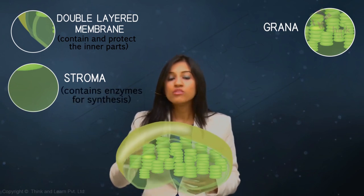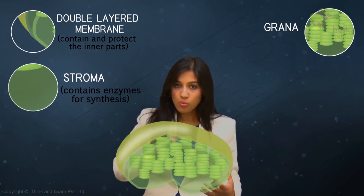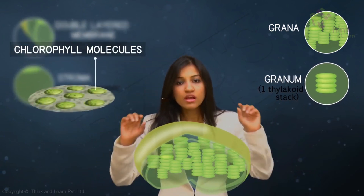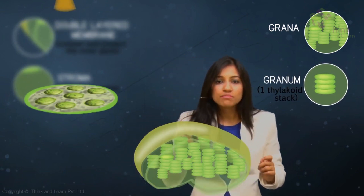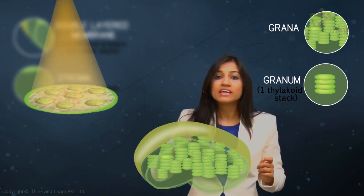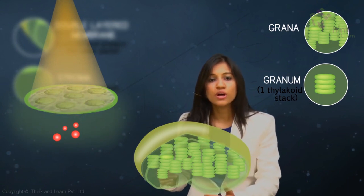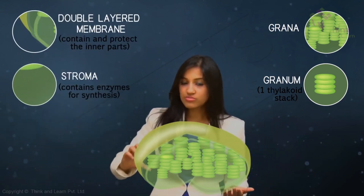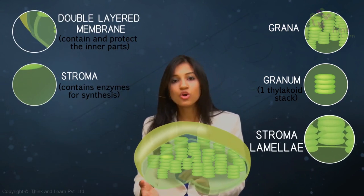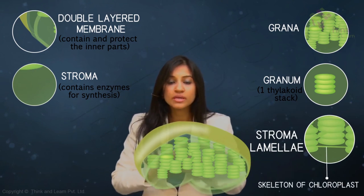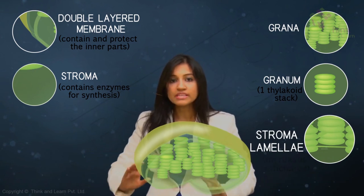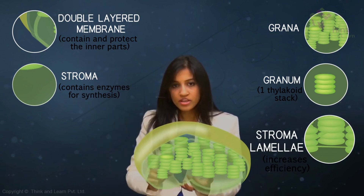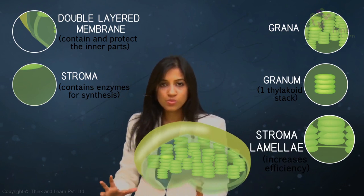The stroma contains enzymes required for the synthesis of carbohydrates and proteins. One stack is called a granum, which contains many thylakoids. Chlorophyll molecules sit on the surface of each thylakoid and capture light energy from the sun. As energy-rich molecules are created, they move to the stroma where carbon can be fixed and sugars can be synthesized. The stacks of thylakoid sacs are connected by structures called stromal lamellae — also called the skeleton of the chloroplast — keeping all the grana at a safe distance from each other and increasing the efficiency of the organelle.